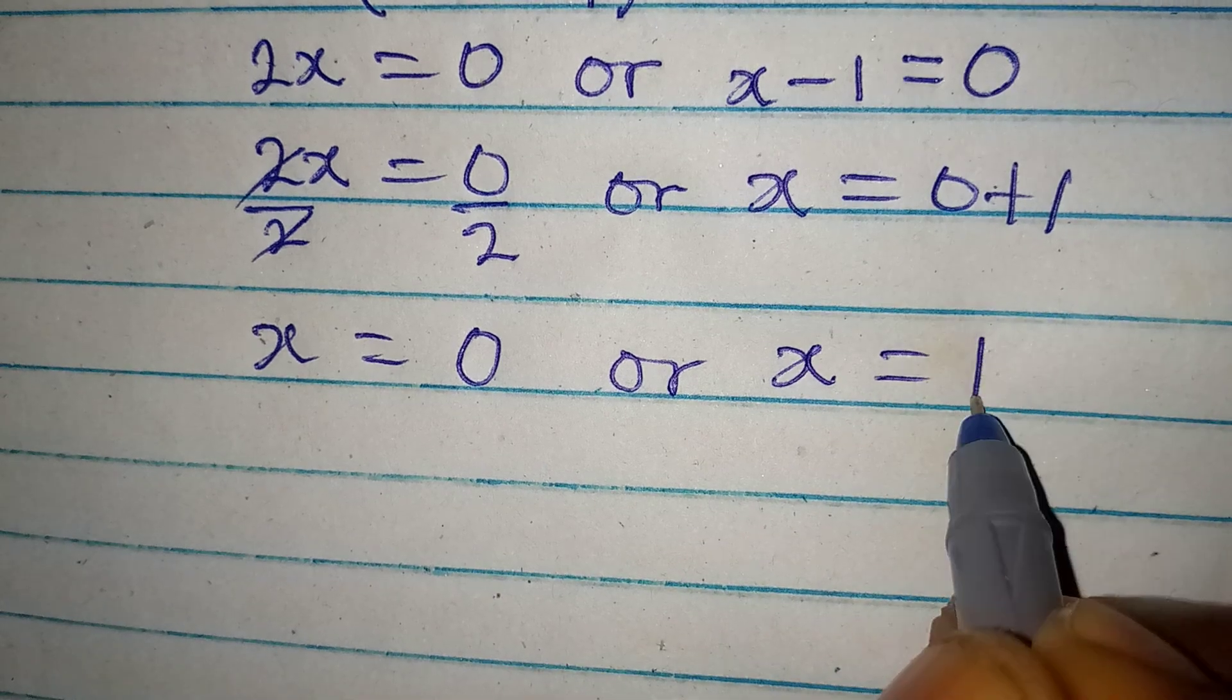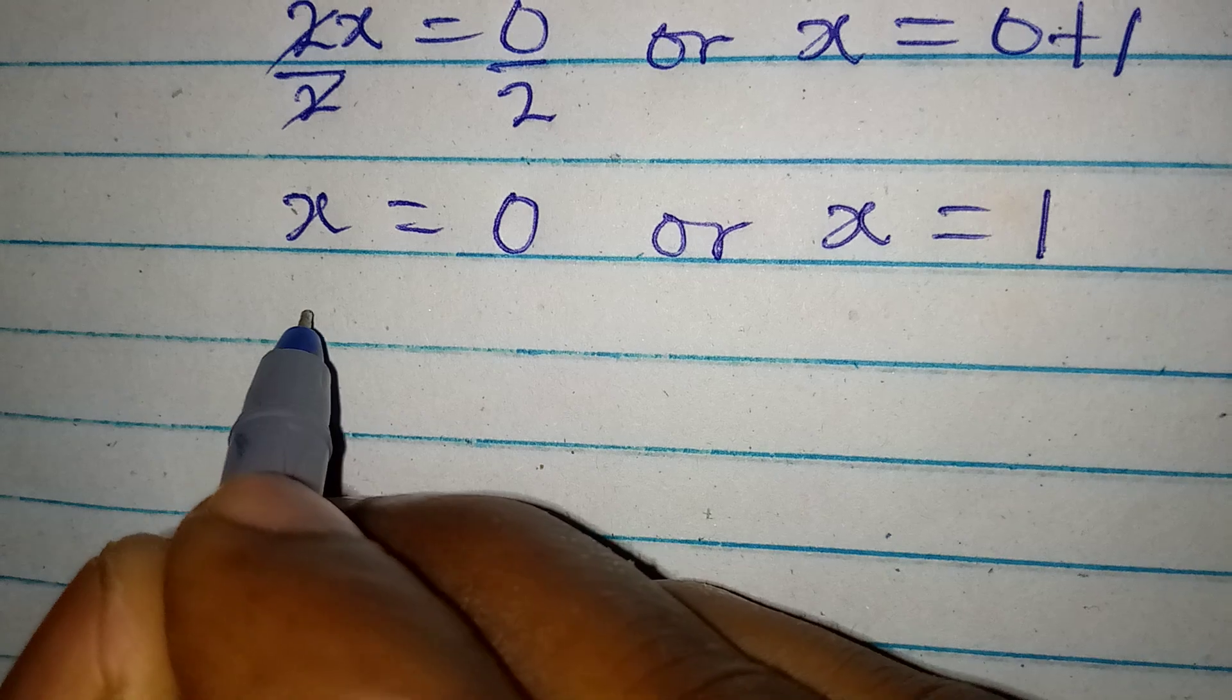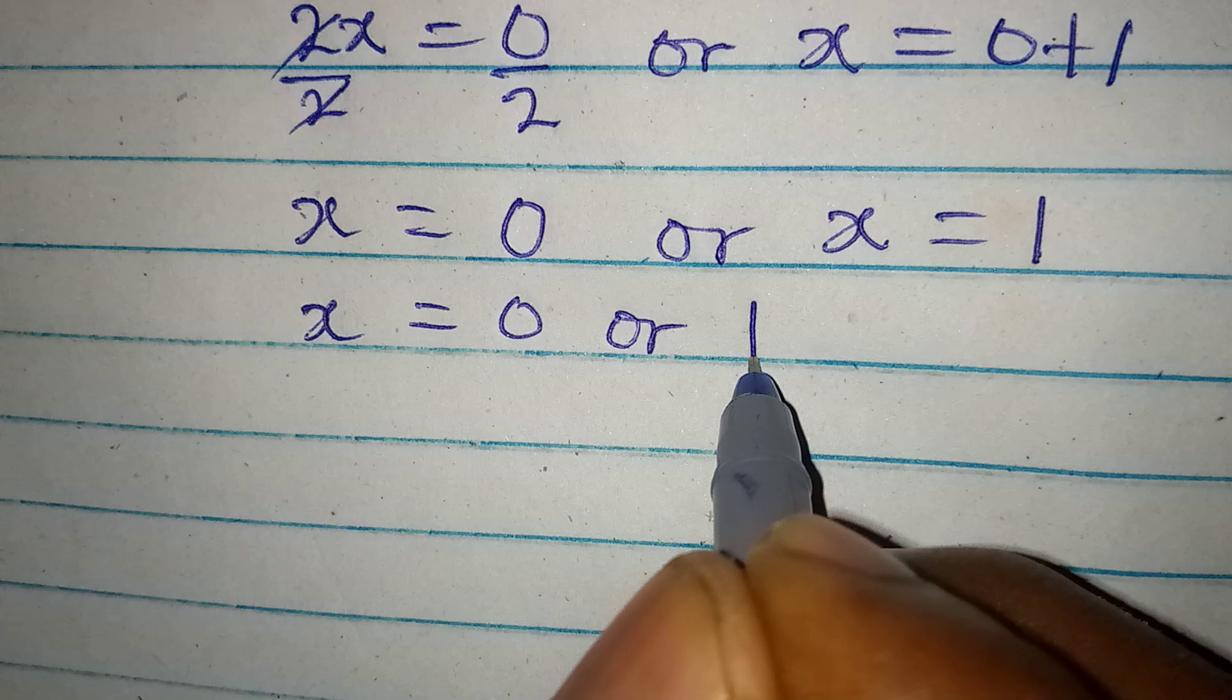Or on this side x is equal to 1. Bringing the two values together we have x to be equal to 0 or 1.